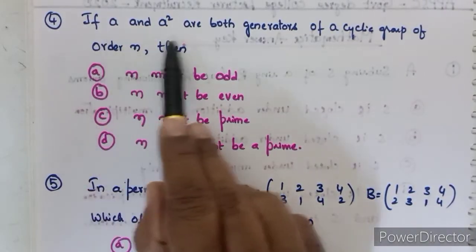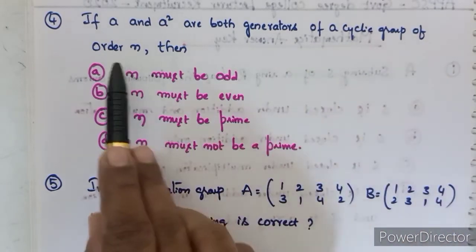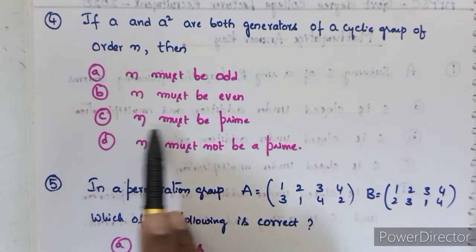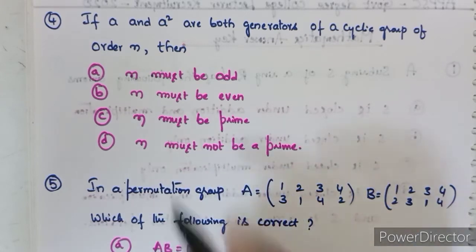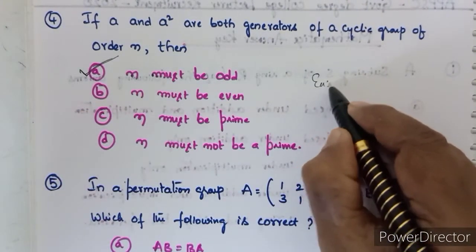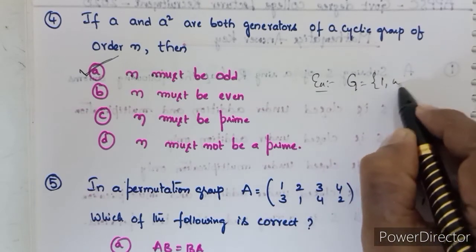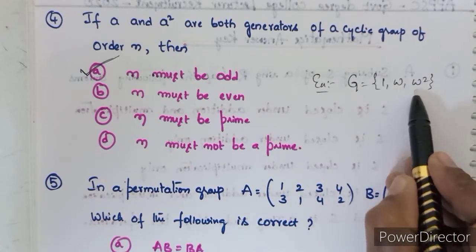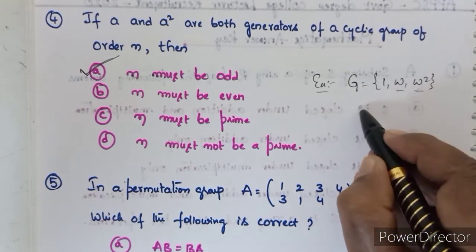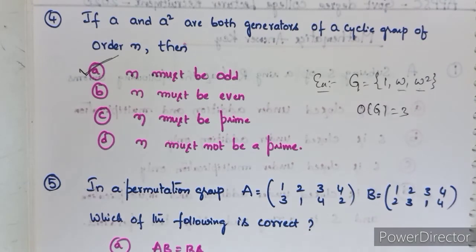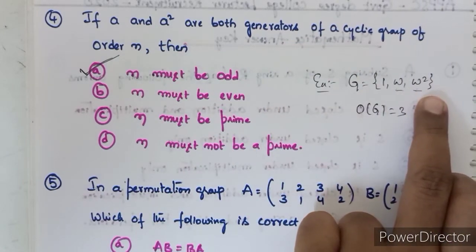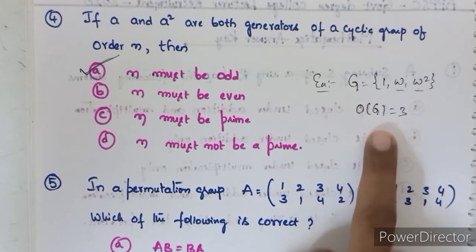Fourth question: if A and A² are both generators of a cyclic group of order N, then N must be: odd, even, prime, or not prime? Option A, N must be odd, is correct. For example, take the cyclic group {1, ω, ω²} of complex cube roots of unity. Here ω and ω² are both generators, and the order of this cyclic group is 3, which is odd.